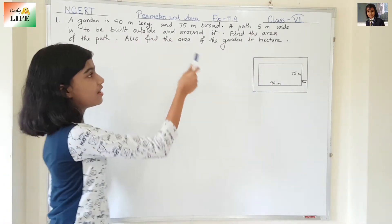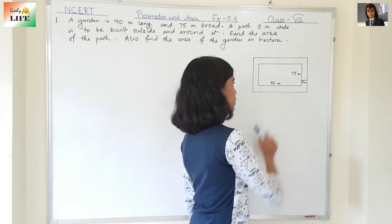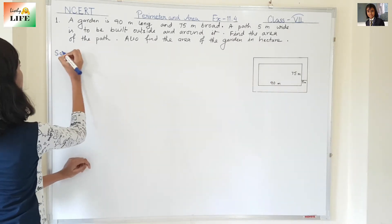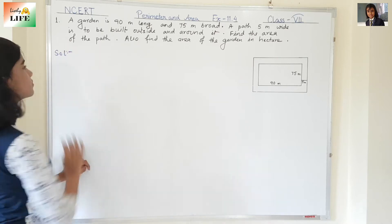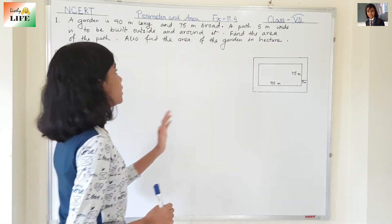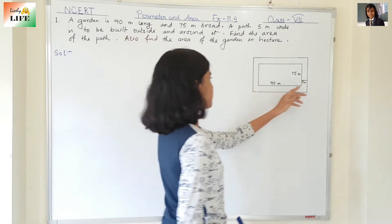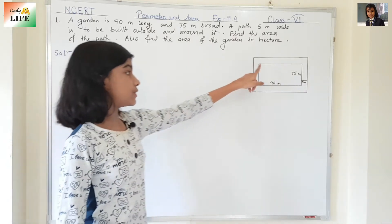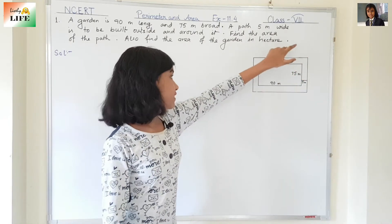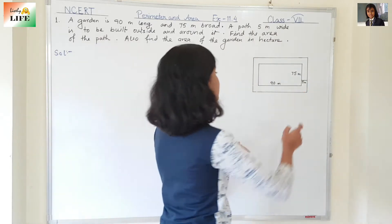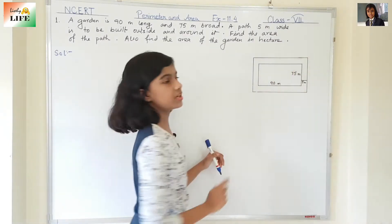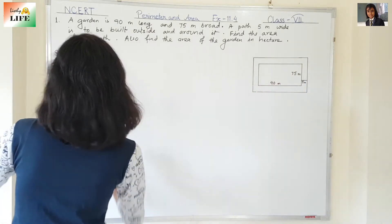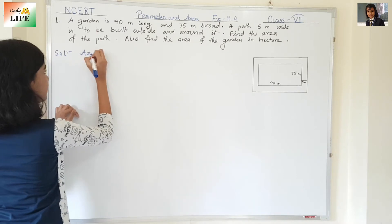Also find the area of the garden in hectare. We also need to find the area of the garden but in hectare. For the solution, first we need to find the area of the path. The path has no regular shape, so what we are going to do is take out the area of the garden and the area of the garden with path, and then subtract the area of the garden from the area of the garden with path to get the area of the path. So first let's find out the area of the garden.